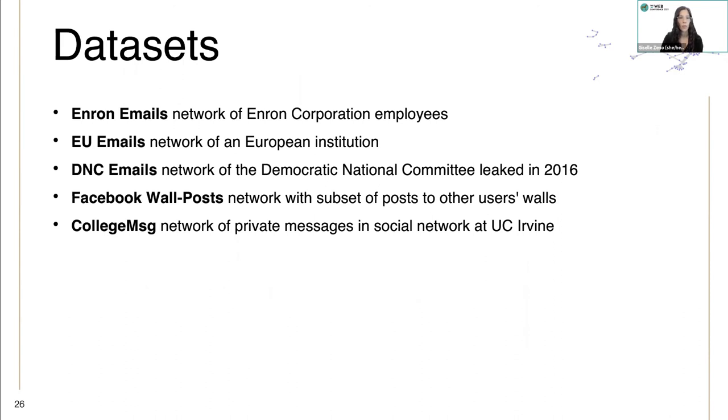Data sets that we evaluate on: we use three email networks for Enron, a European institution, and the Democratic National Committee. And then we have another data set with a subset of wall posts on Facebook, and one with a private message network at UC Irvine.